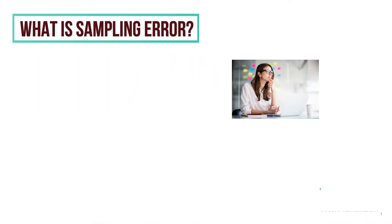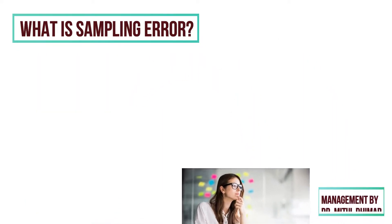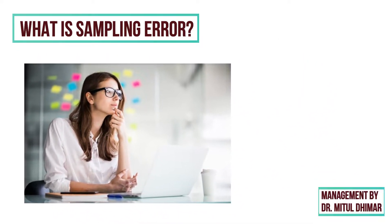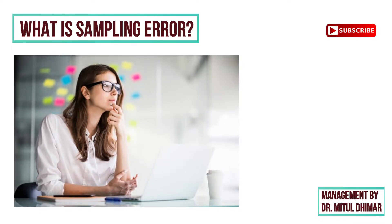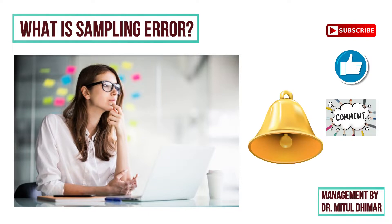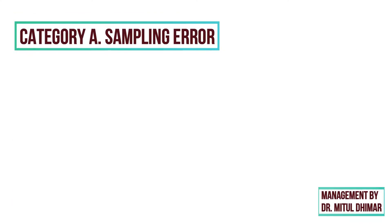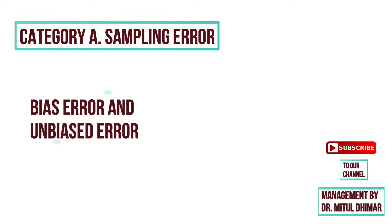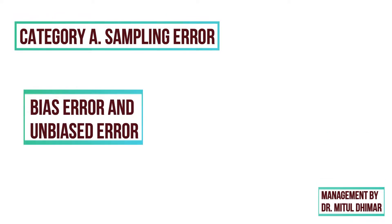Now let us understand the types of sampling errors in detail. Category A: sampling error. We are going to understand two types of sampling errors — bias error and unbiased error.